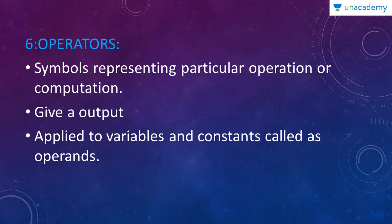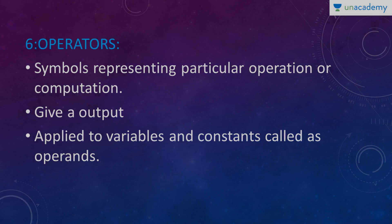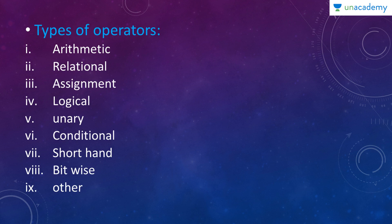Let us go to operators. Operators are symbols representing particular operation or computation which gives an output. Once you perform an operation, it will obviously give an output and it is applied to variables and constants called as operands. So, between two operands, you have an operator. There are many types of operators: arithmetic operator, relational, assignment, logical, unary, conditional, shorthand and bitwise and there are other operators as well. Let us go through them one by one with examples.